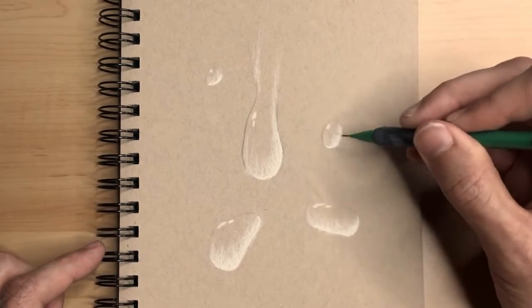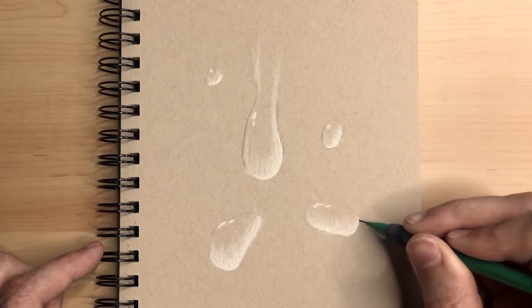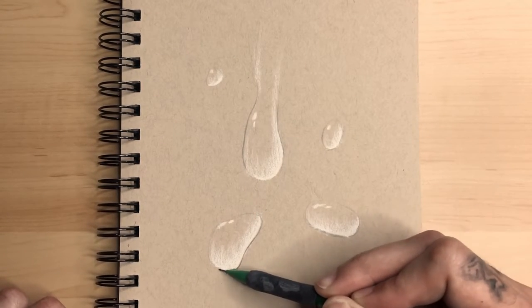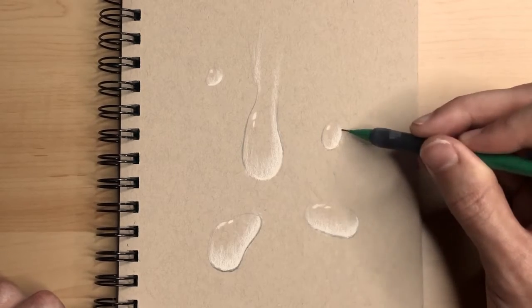Then I grab my graphite pencil and go across with shadows. I add the shadows around the borders, not completely around the shape of the droplets, but around the bottoms, exactly where the shadow would start casting.